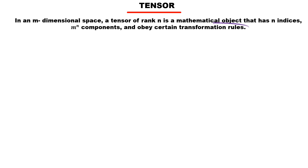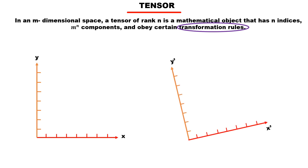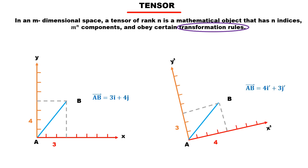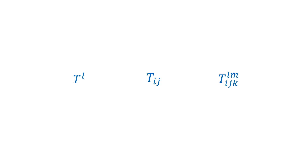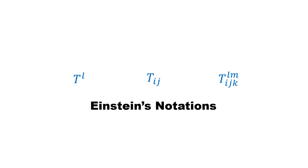The last part of the definition is that a tensor obeys certain transformation rules. This means that even if a quantity is measured in different reference frames, the value of the quantity should not be affected. Even if its components change, the quantity itself should remain the same — such as the distance between A and B. Measured from two different coordinate systems, the components of vector AB change, but the magnitude and direction of AB remain the same. This transformation rule is what separates a tensor from a matrix. A matrix is just an array of numbers, but a tensor obeys certain transformation rules. Hence, a matrix and a tensor are different. Tensor is a different kind of mathematical language for representing a quantity, using Einstein's notation. In the next video, we will understand these notations and terms like covariant and contravariant tensors.